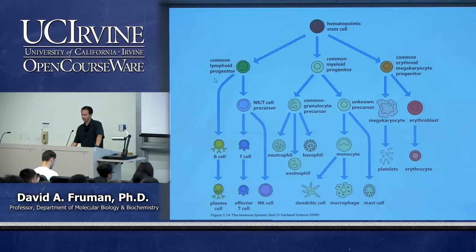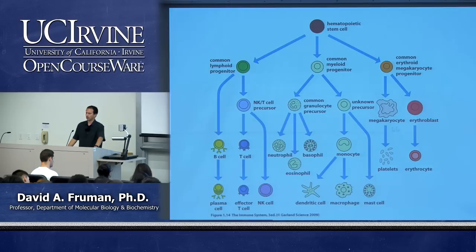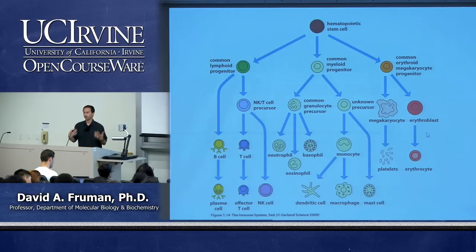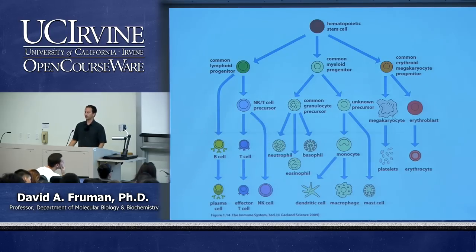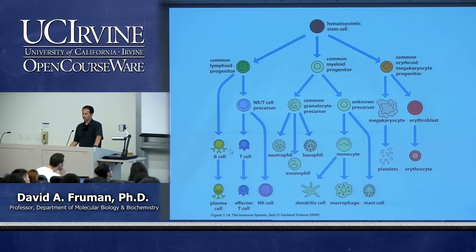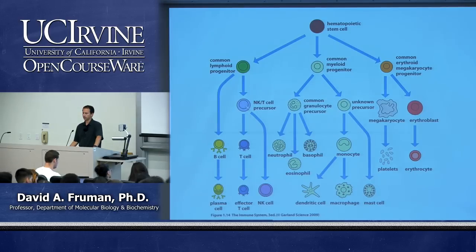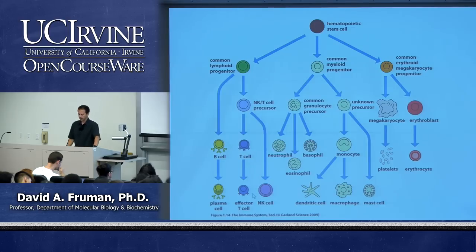The three progenitors are the common lymphoid progenitor, the common myeloid progenitor, and the common erythroid megakaryocyte progenitor. This class is immunology with some hematology — hematology covers red blood cells, blood groups, platelets, clotting, leukemia, and lymphoma. We're really focused on the white blood cells. From the common lymphoid progenitor arise three mature cell types: B cells, T cells, and natural killer NK cells. The B cell splits off earlier, and then there's a common precursor for T cells and NK cells.